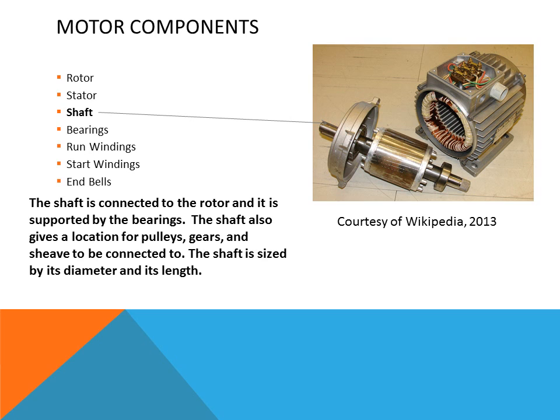Gears and other devices can also be connected to the shaft. Some motors have shafts on both sides, such as window air conditioners which use a double shaft motor — one end of the shaft turns the evaporator fan and the other side turns the condenser fan motor.